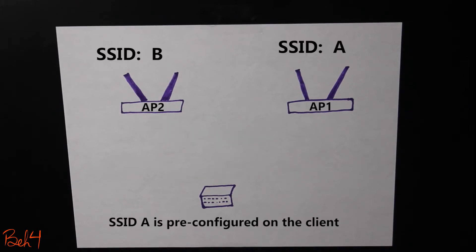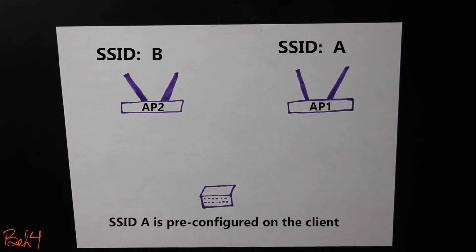In this method, the wireless client is going to start listening for beacons from the access points in the area. Beacons are management frames that are sent continuously from the access points to let the clients know of their existence. They contain some information regarding the wireless network, including the SSID name, channel information, data rates, and more.